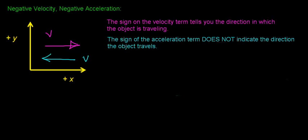In this video, we're going to do an example of an object that has negative velocity and negative acceleration. To re-emphasize points from the last video: the sign of the velocity term tells you the direction the object is traveling. We can also indicate this with a velocity vector — a positive velocity vector means the object travels in the positive x direction, while a negative velocity vector means it travels in the negative x direction.